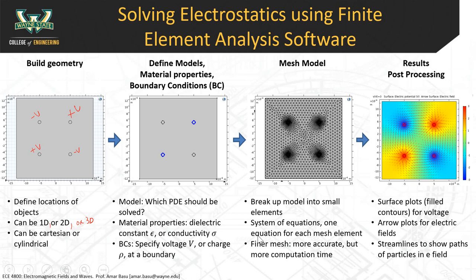If you want a more accurate answer, you use a finer mesh with smaller elements, but that takes more computation time. If you want faster computation but less accuracy, you use a coarser mesh. Finally, we get to the results: we'll do surface plots of the electrostatic potential, arrow plots of the electric fields, and streamlines to show the paths of particles in an electric field.